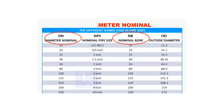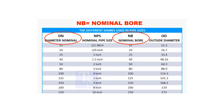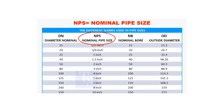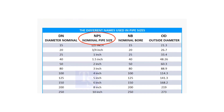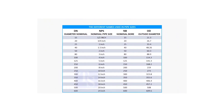DN and NB are the international and European metric methods used to describe NPS. The actual outer diameter, OD, is not the same as DN and NB. These are reference sizes only.